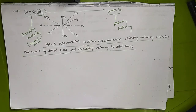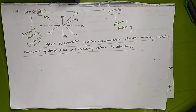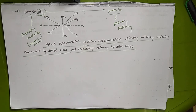To summarize the four postulates of Werner theory: First, metal complexes have two types of valency — primary and secondary. Second, primary valency is ionizable and satisfied by counter ions. Third, secondary valency is not ionizable and is equal to the coordination number. Fourth, secondary valency is responsible for the geometry and spatial arrangement of the molecule in the coordination compound. Thank you so much for watching.